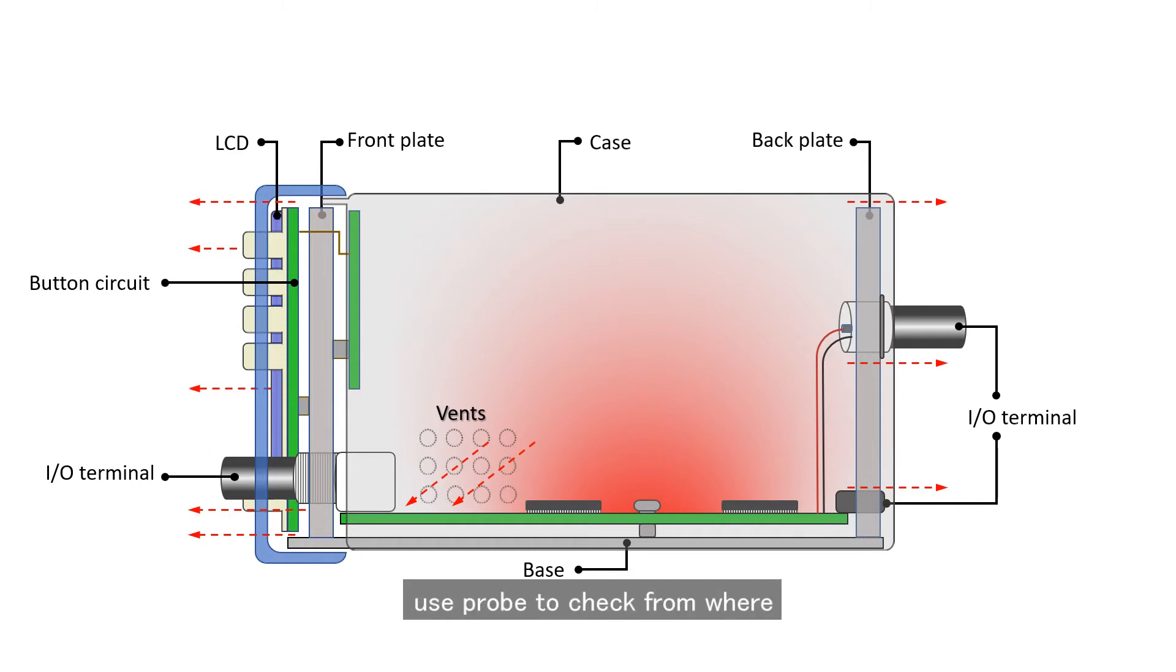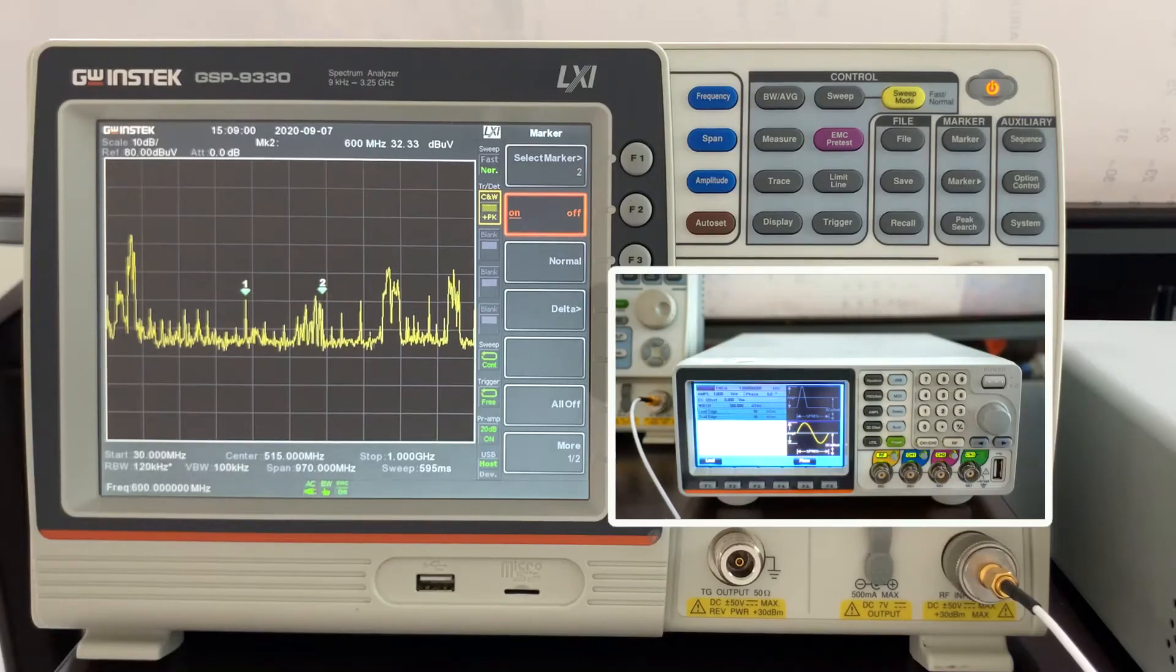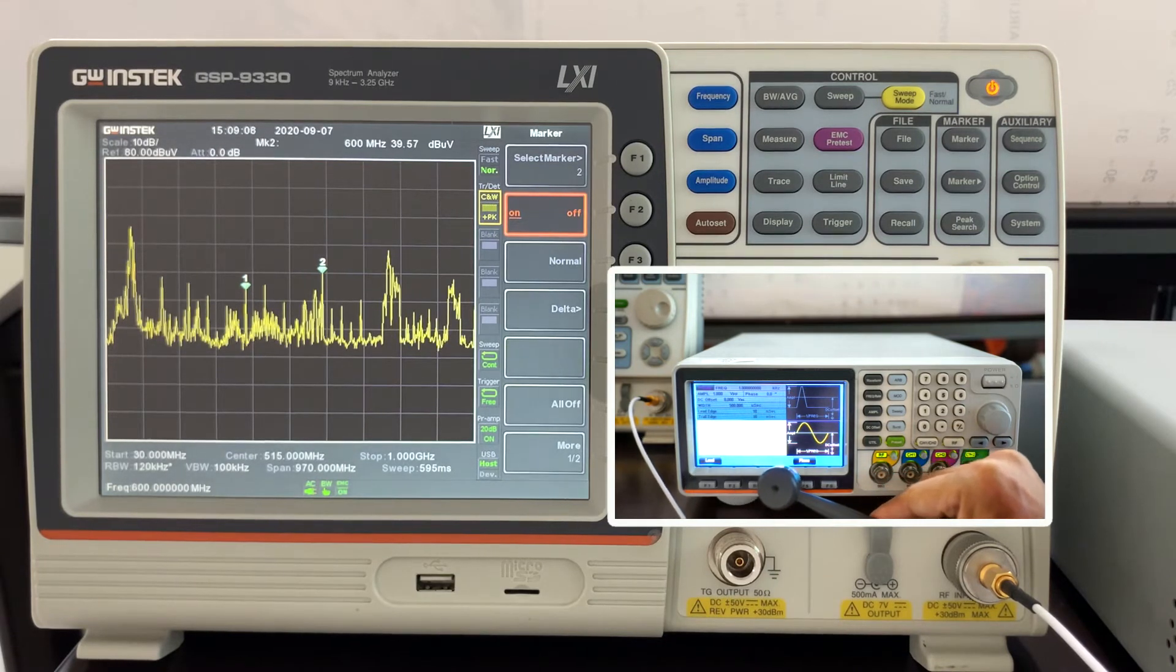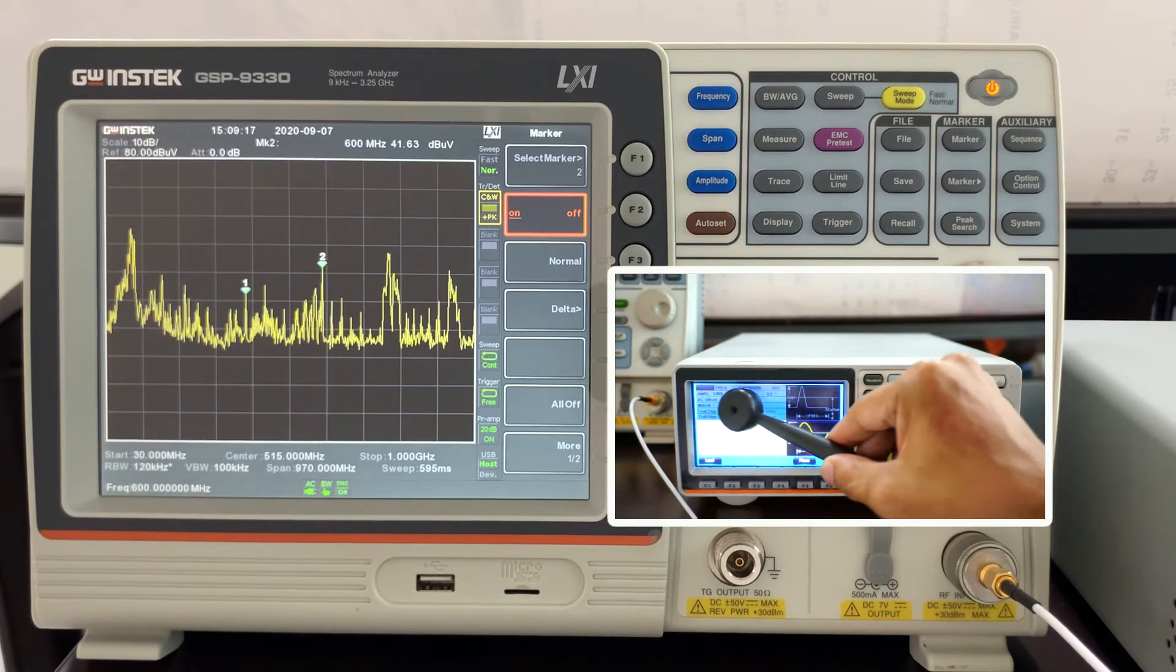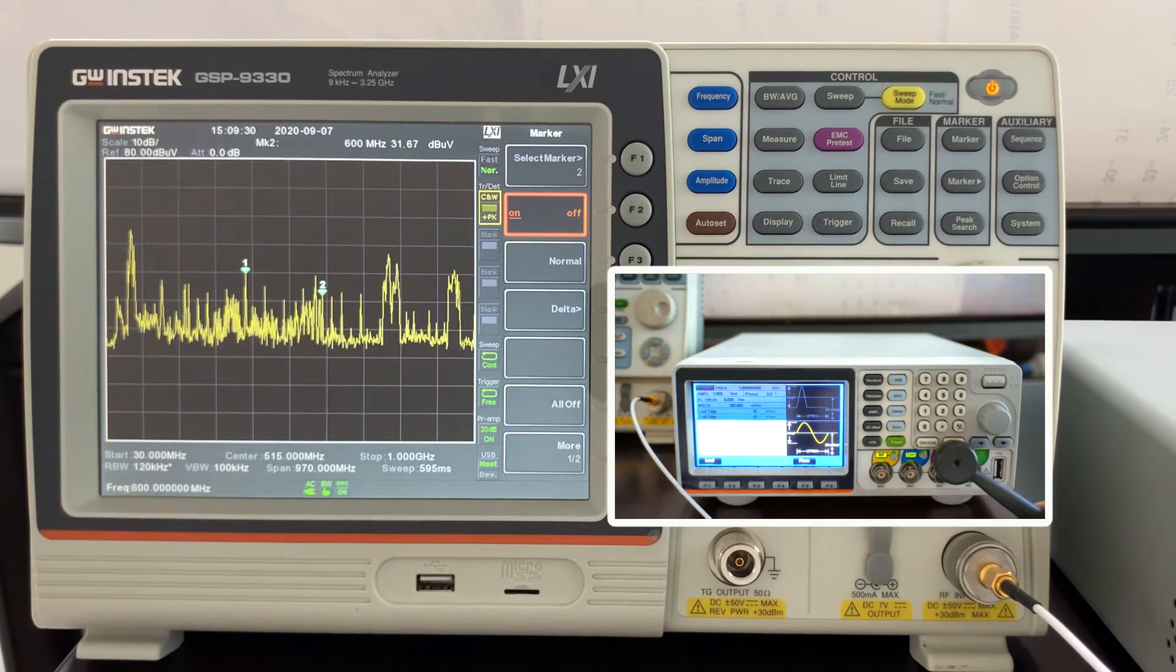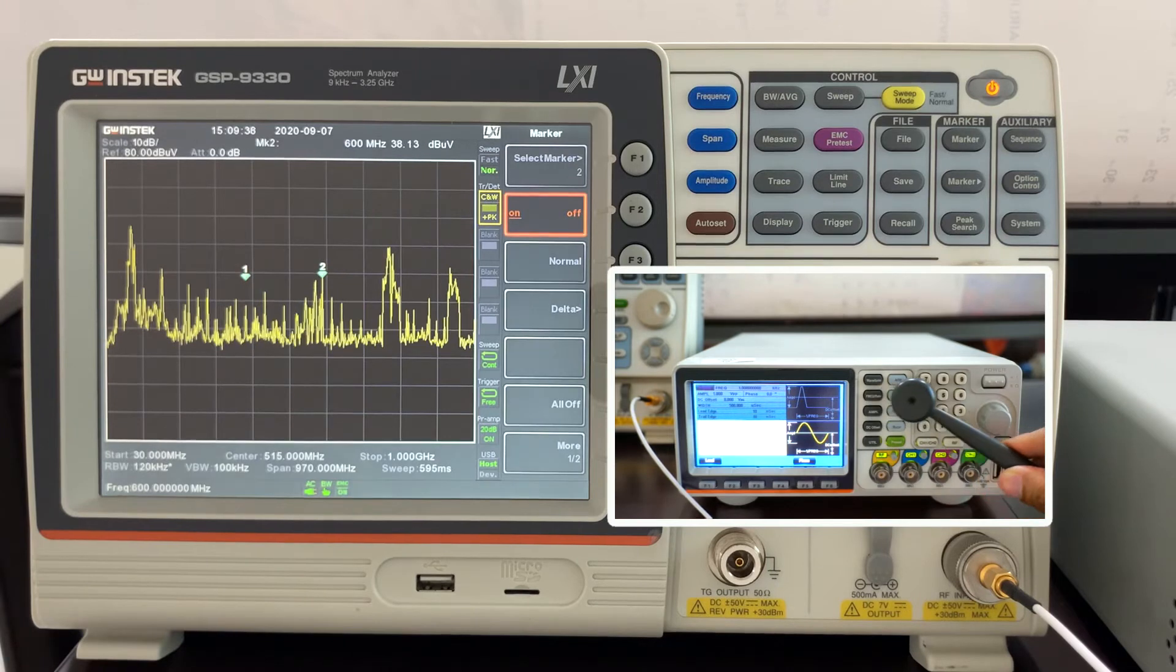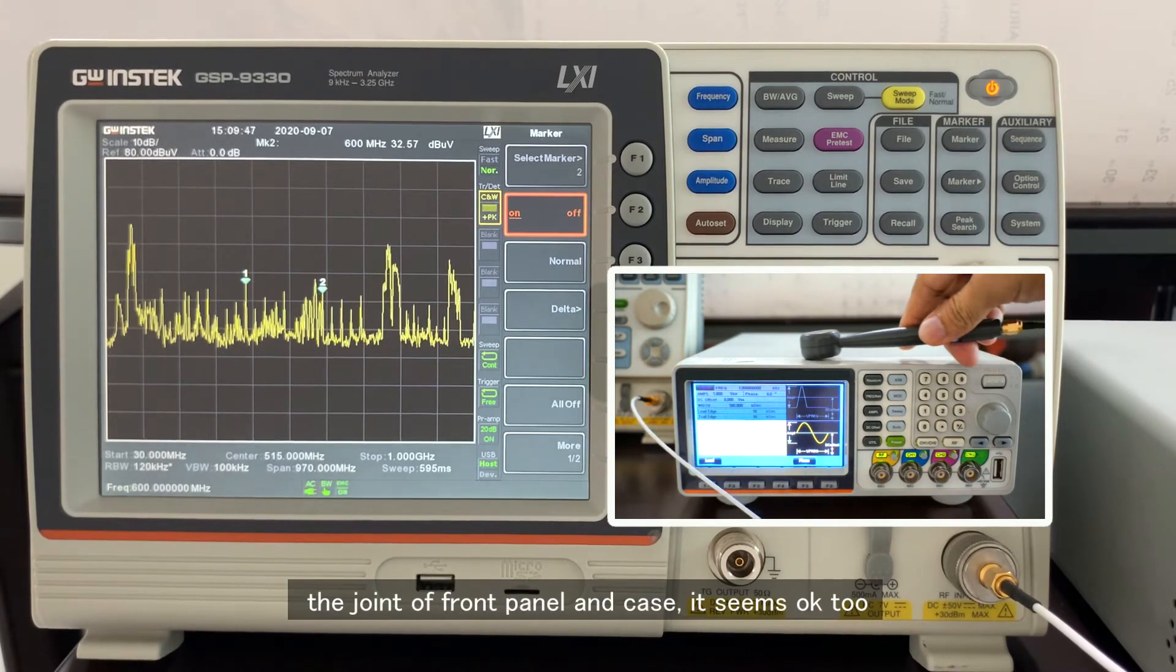Next, let's assemble the EUT and use probe to check from where the 400MHz and 600MHz signals will come out. Now the EUT is reassembled and turned on. Let's check the bottom below the LCD first, and the LCD. These two signals are strong here. Move to BNC terminals. Here the 400MHz is stronger than 600MHz. It's pretty obvious here. The bottom area seems better. Now to the top, the joint of front panel and the case. It seems okay too.